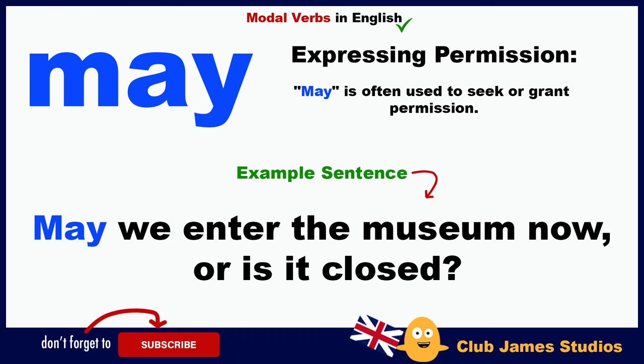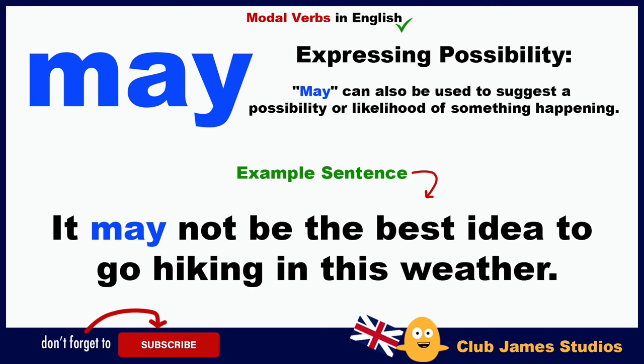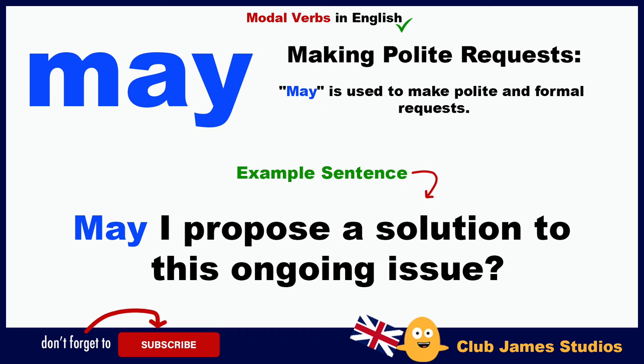Expressing permission: 'may' is often used to seek or grant permission. Example: may we enter the museum now, or is it closed? Expressing possibility: 'may' can also suggest a possibility or likelihood — it may not be the best idea to go hiking in this weather. Making polite requests: may I propose a solution to this ongoing issue?